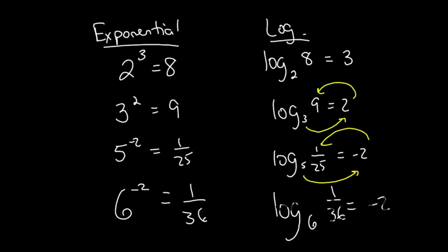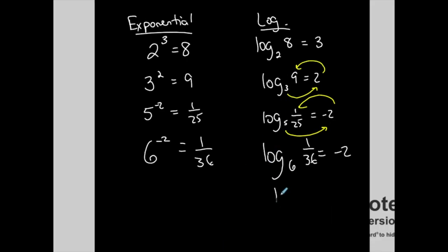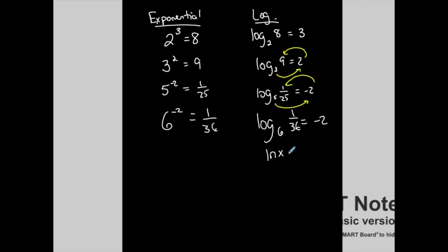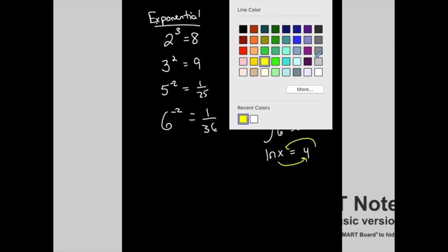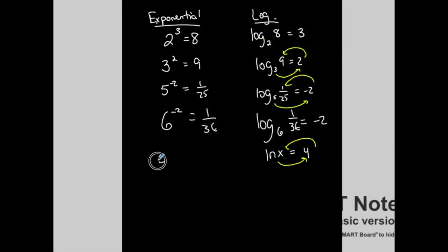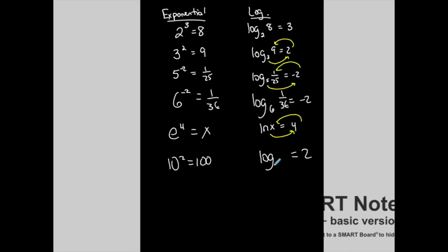Going back and forth between exponential and logarithmic form: if ln of x is equal to 4, this is the same property of logarithms but the base is e. Around the world counterclockwise, the base raised to this exponent is equal to this. In exponential form, the base is e raised to the fourth, equal to x. For 10 squared is 100, written in log form: the base of the log is 10 — I don't have to write the base. The exponent is 2, and the argument is 100, so log of 100 is equal to 2. If the base is not written, it's automatically base 10.